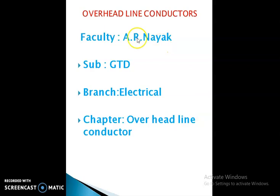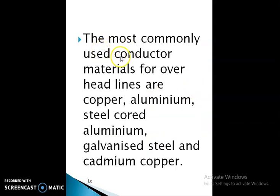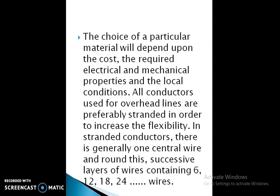Today we will discuss Chapter 3: Overhead Line Conductors of GTD Branch Electrical. The most commonly used conductor materials for overhead lines are copper, aluminum, steel-cored aluminum, galvanized steel, and cadmium copper. The choice of a particular material will depend upon the cost, required electrical and mechanical properties, and local conditions.